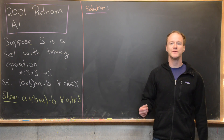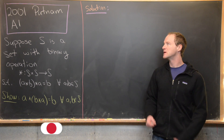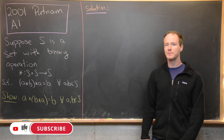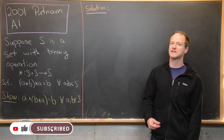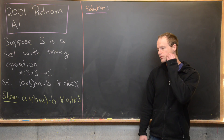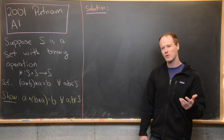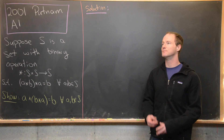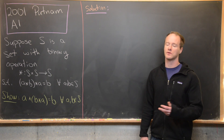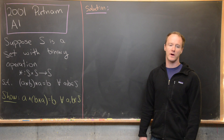Here we're going to look at a problem from the 2001 Putnam exam. This is question A1, and some people consider this to be the easiest Putnam question of all time. Maybe I won't go that far, but once you see the trick, you'll notice that the solution is very, very quick.